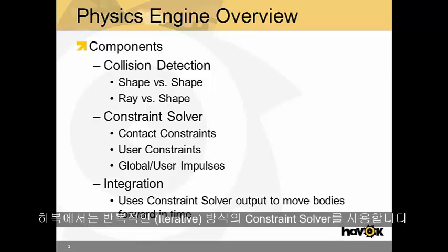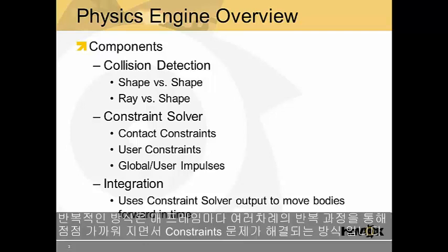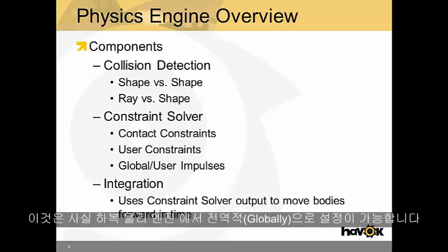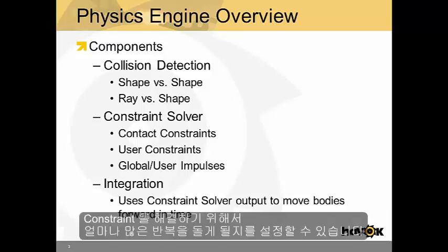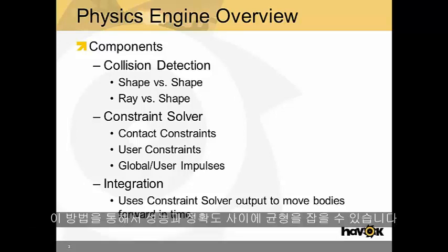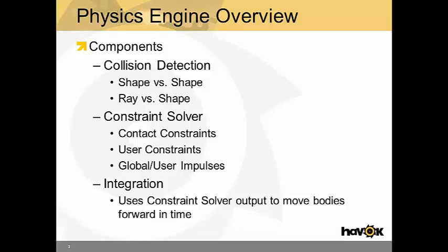Havok uses an iterative constraint solver. That means that with each iteration, the constraints get closer and closer to being resolved. This is a global setting within Havok where you can tune how many iterations Havok will use to solve constraints — this is a trade-off between performance and accuracy.